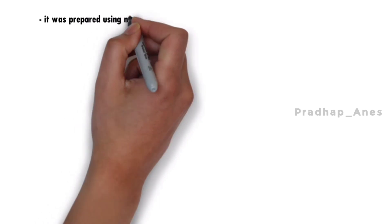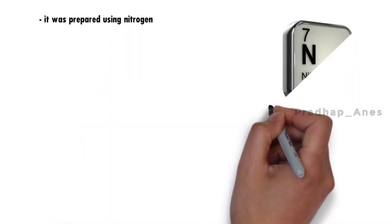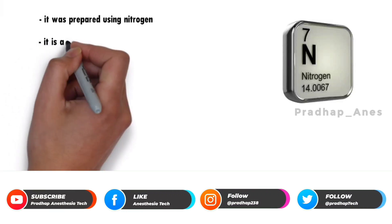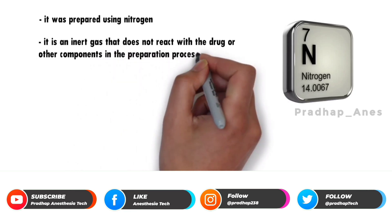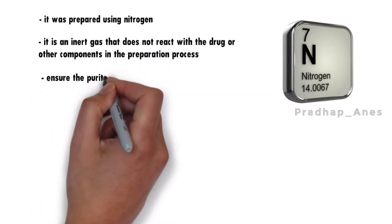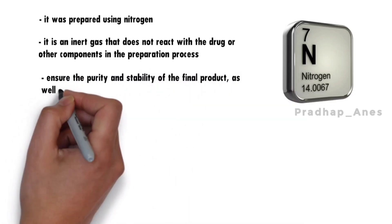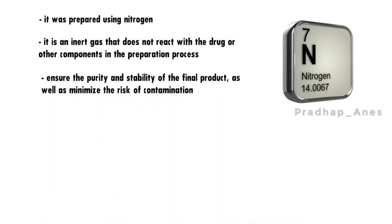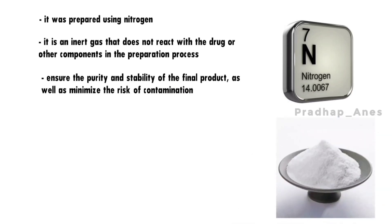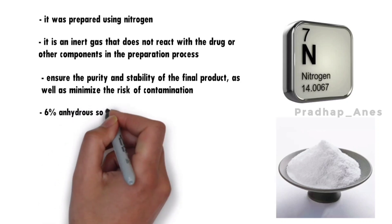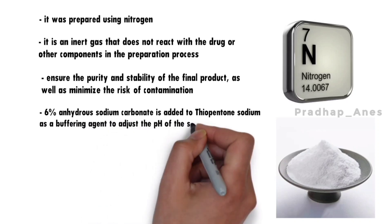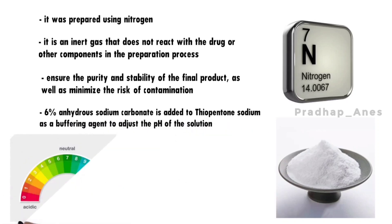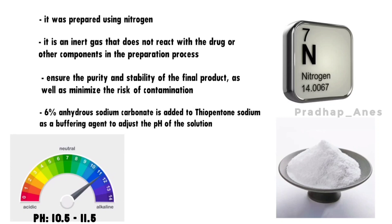Usually it is prepared using nitrogen. Nitrogen is used as a carrier gas when preparing thiopentone because it is an inert gas that does not react with the drug or other components in the preparation process. This helps ensure the purity and stability of the final product and minimizes the risk of contamination or degradation. It also contains a preservative: 6% anhydrous sodium carbonate, which is added as a buffering agent to adjust the pH of the solution. Due to the formation of hydrosulfide, the pH increases, and the ideal pH of thiopentone sodium should be 10.5 to 11.5.